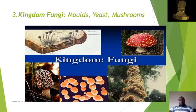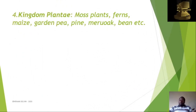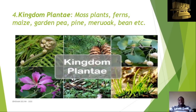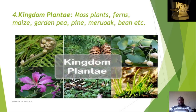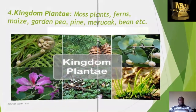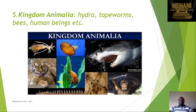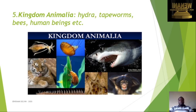You can see from the photo the molds, the yeast, and the mushrooms. The fourth kingdom is Kingdom Plantae, which encompasses all plants — flowering and non-flowering — such as maize, garden pea, pine, bean plant, and eucalyptus. The fifth kingdom is Kingdom Animalia, which consists of all animals — hydra, human beings, cow, dogs, shark, monkey, starfish, millipede, centipede, and others.